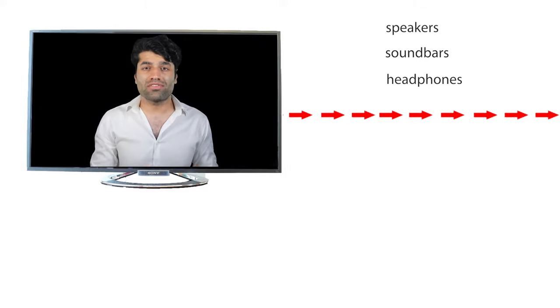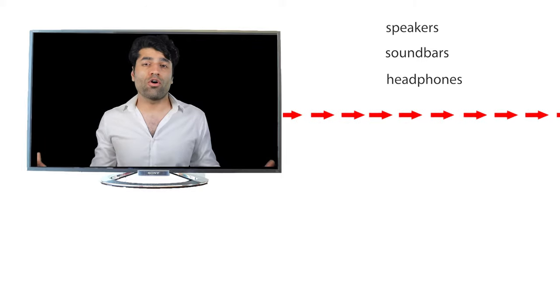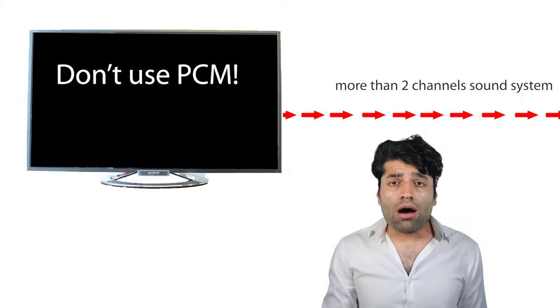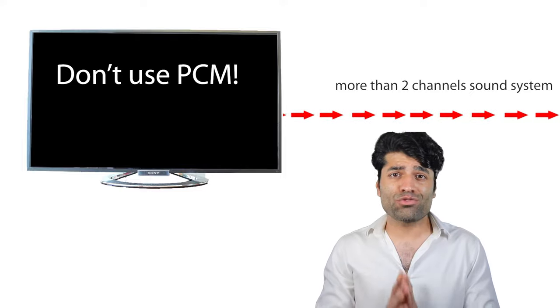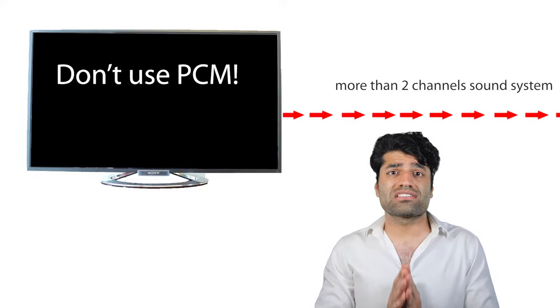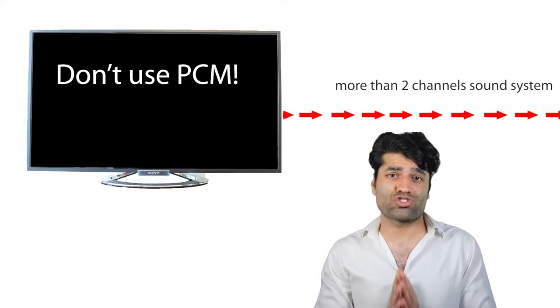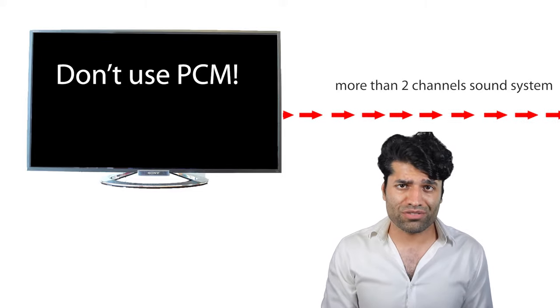Now, what is the best option if you are connecting your TV to an output device such as a soundbar or a home theater system? As a rule of thumb, don't select PCM for an output device that has more than two channels, for example 5.1 channels.